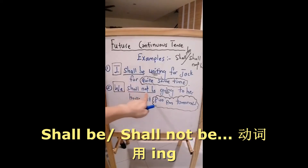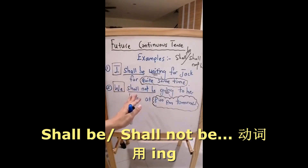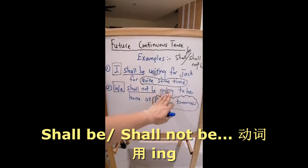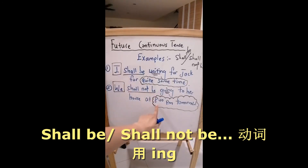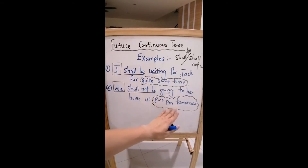Number two: 'We shall not be going to her house at 8pm tomorrow.' 我们将不会在明天八点去她的家。'Shall not be', 然后动词加 I-N-G. 未来某件事情将会发生在比较特定的一个时间。